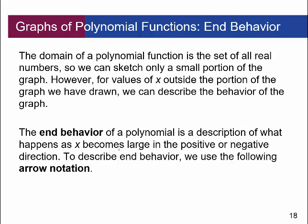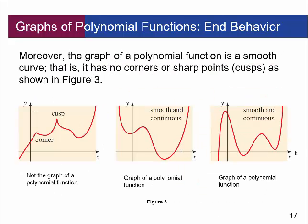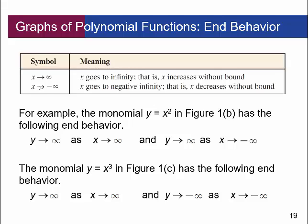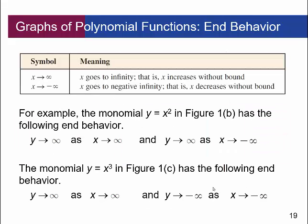To describe end behavior, we use arrow notation. As x goes to infinity — x increases without bound — we describe what happens to y. Similarly, as x goes to negative infinity, x decreases without bound. For example, the monomial y equals x squared has end behavior: y goes to infinity as x goes to infinity, and y goes to infinity as x goes to negative infinity. The monomial y equals x cubed has: y goes to infinity as x goes to infinity, and y goes to negative infinity as x goes to negative infinity.